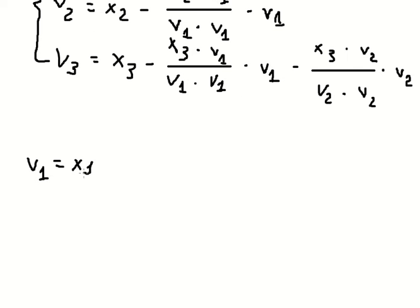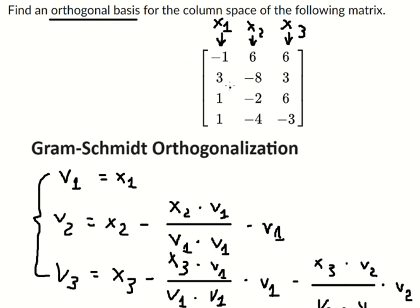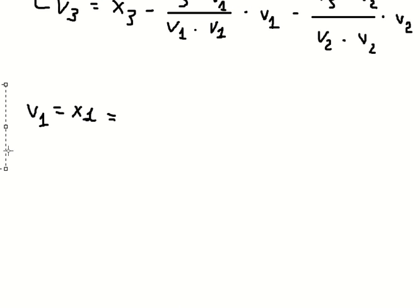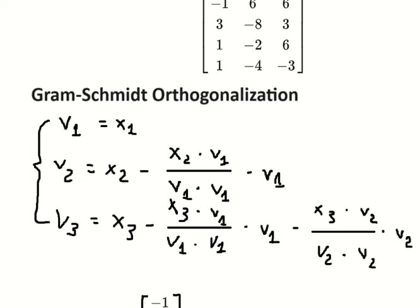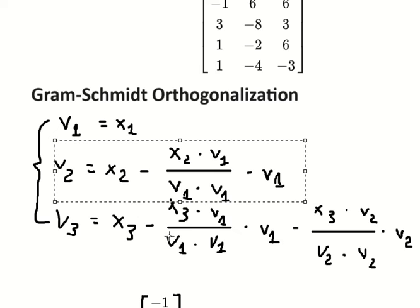The first one: v1 equals S1. S1 is this vector here, so we just copy this one. Now we go to v2.